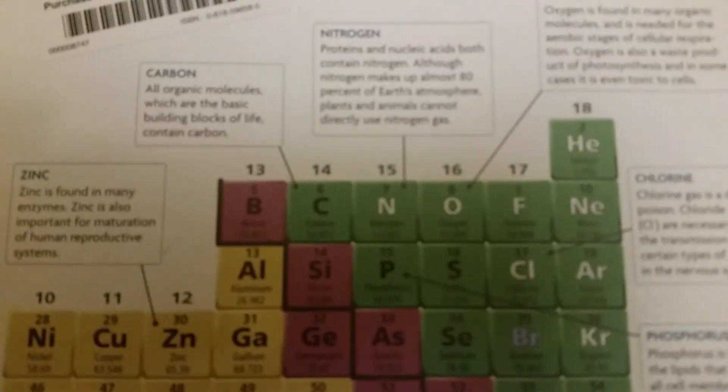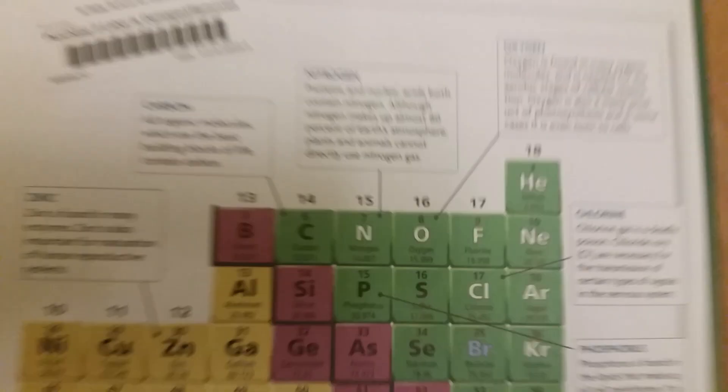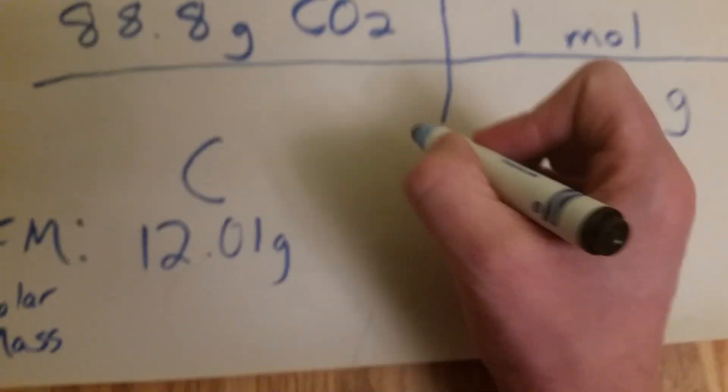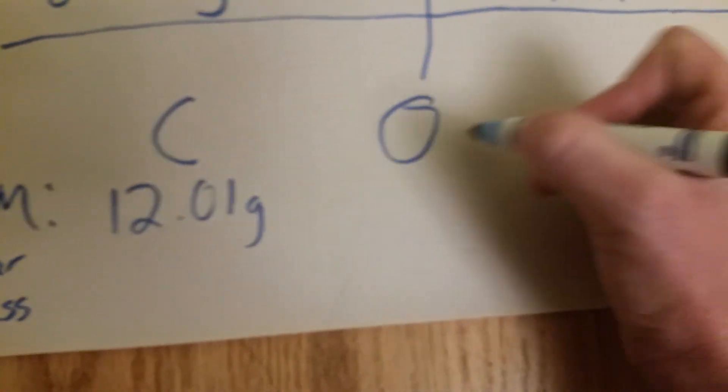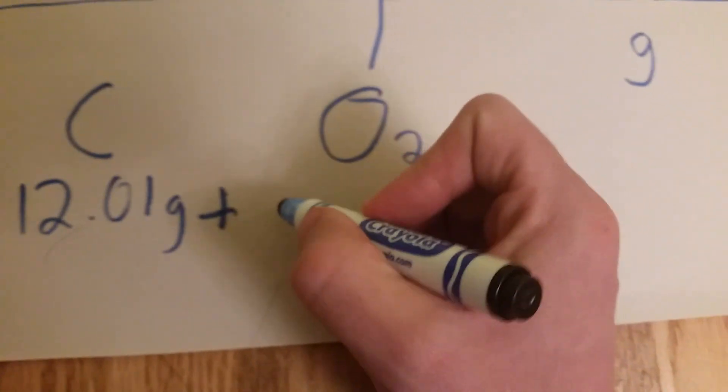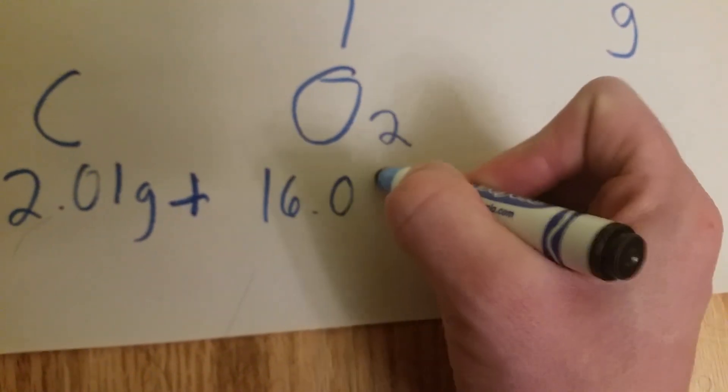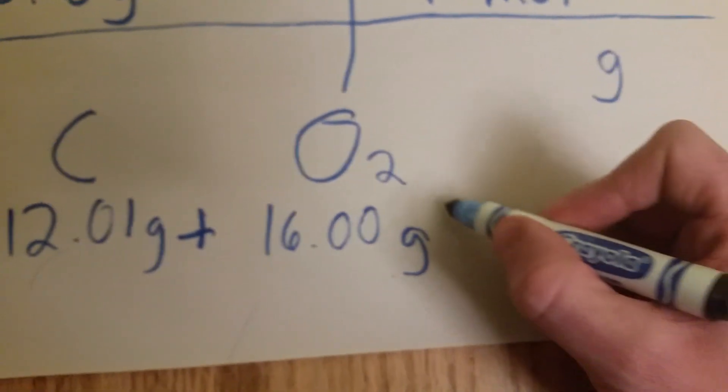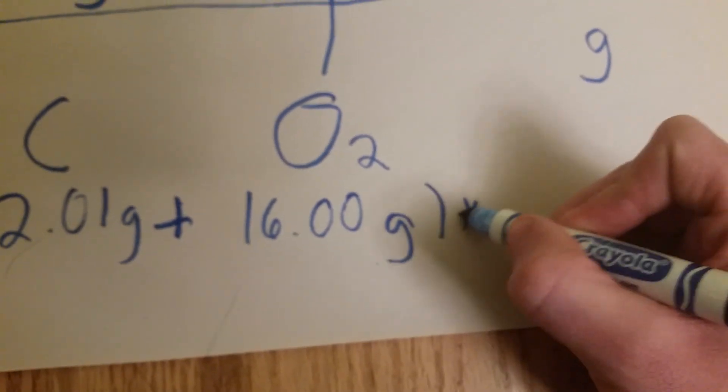So let's look for carbon first. Well, if we look, we see carbon 12.01, 12.01 grams. And we need two oxygens. So we're going to go O2. Add this. Let's find oxygen. Oh yeah, we're going to have 16.00 when we round it. And we have to have two of these. Times 2.